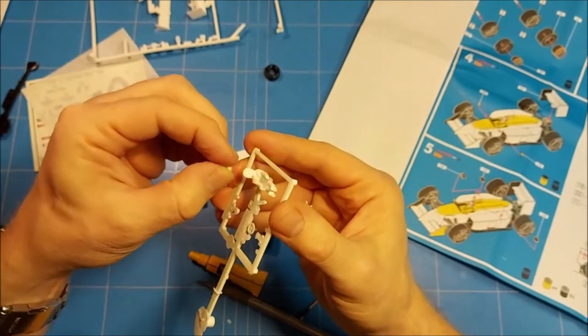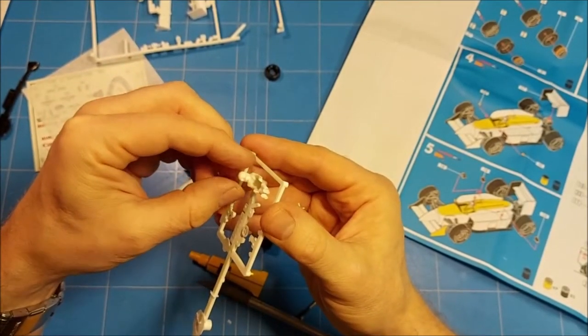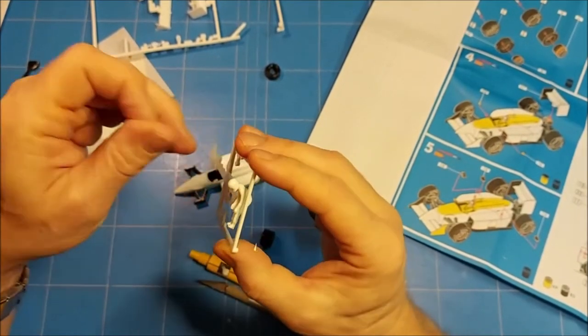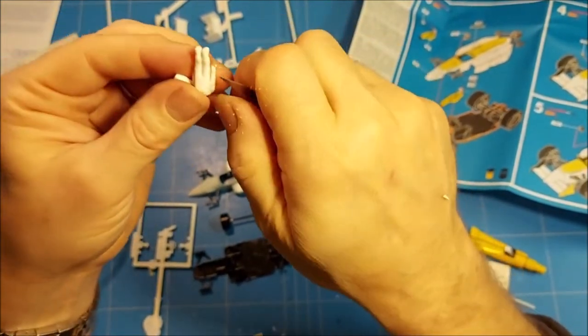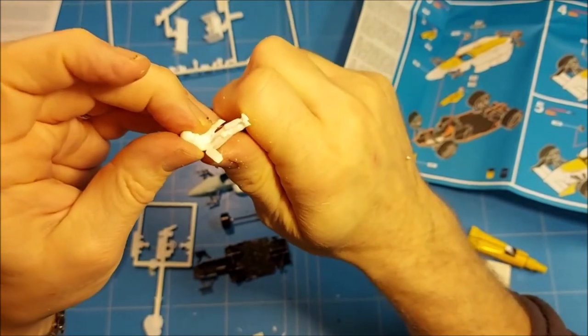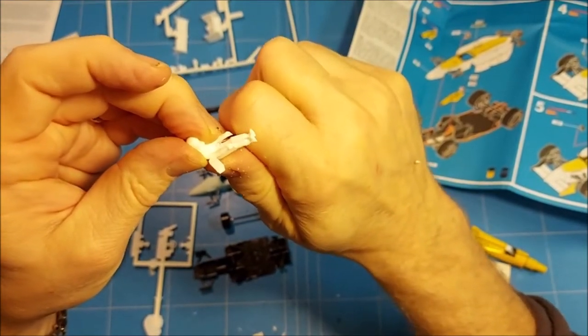The driver figure had half of the head as a separate part. And the arms were joined to the hip and legs.